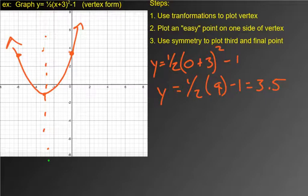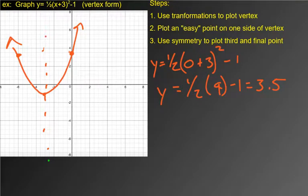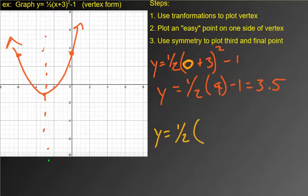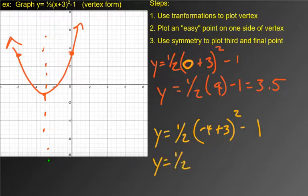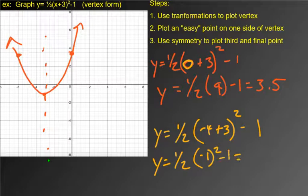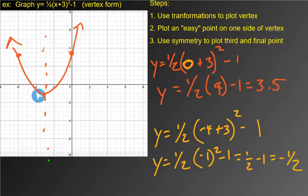That's literally it for vertex form. You get the vertex for free because you can just read it from the equation. Then you pick an easy point — a lot of times that's x equals 0 for the y-intercept. You could also try something like x equals negative 4, which makes the inside simplify to negative 1, easy to square, giving positive 1 times a half minus 1 equals negative one half. So negative 4, negative one half checks out. Just pick something easy and plug it in.